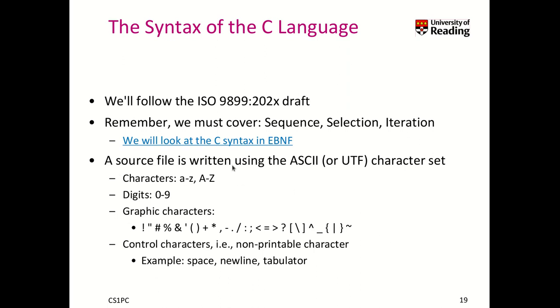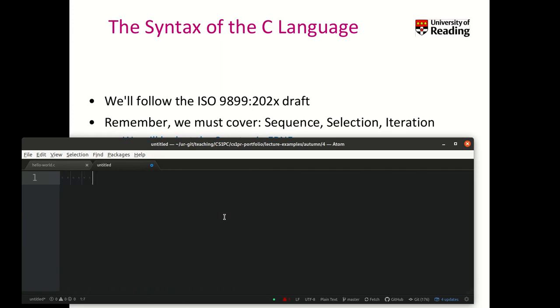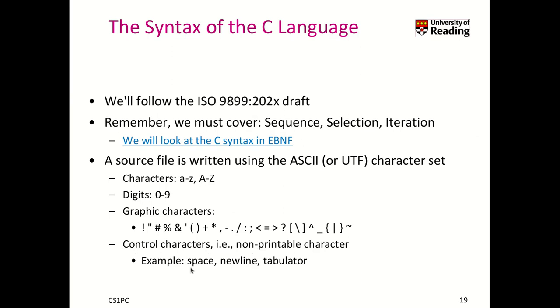Any C programming file is written usually using the ASCII character set. There are also, nowadays, it's possible to use UTF character sets, but we will decide on our standard ASCII character set that we have learned last week. So that means you can use, typically, those normal characters, digits, and we use these kind of graphics characters that you will find here enumerated. There are also some control characters, that means non-printable characters like space, newline, and tabulator. But I wouldn't use any other kind of characters that are not printed. By not printed, that means you don't see them.